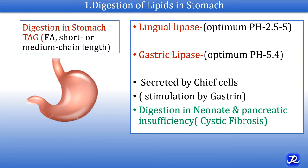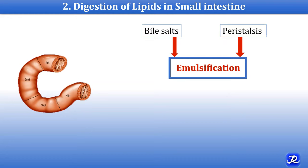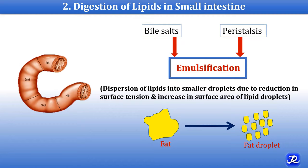The second step is digestion of lipids in the small intestine. The process of emulsification is essential for the digestion of lipids in the small intestine, and this emulsification is brought about by two complementary mechanisms: first, the detergent action of bile salts, and second, mechanical mixing by peristalsis. Emulsification is the process of dispersion of lipids into smaller droplets due to reduction in surface tension and increase in the surface area of lipid droplets, so that lipases can act on the surface of smaller lipid droplets.